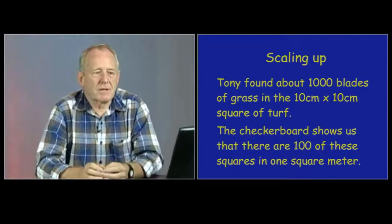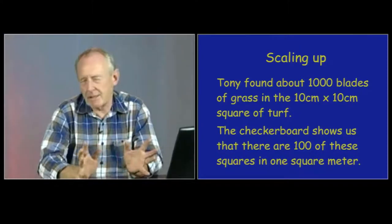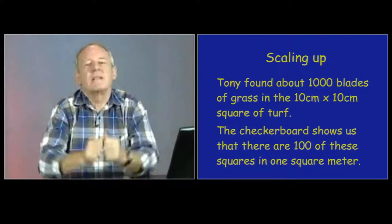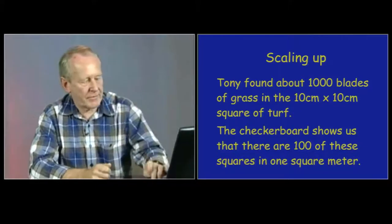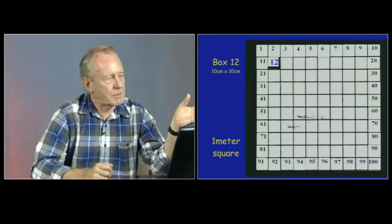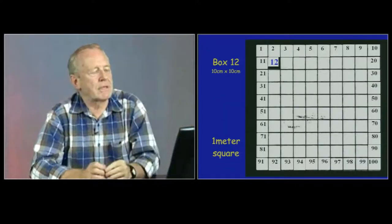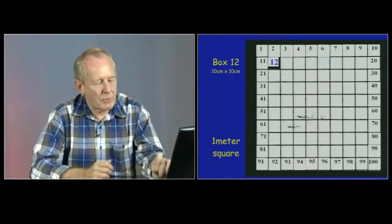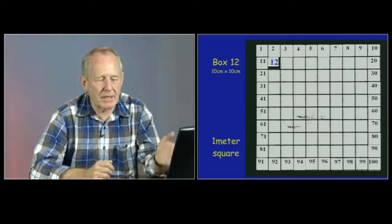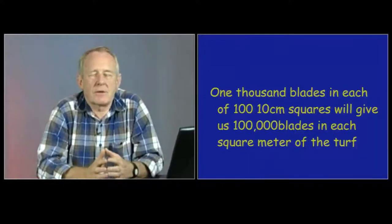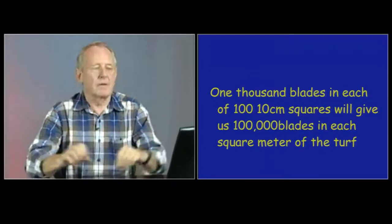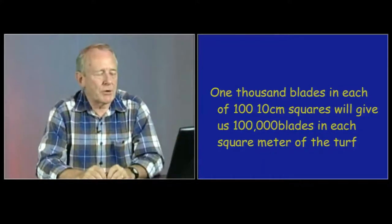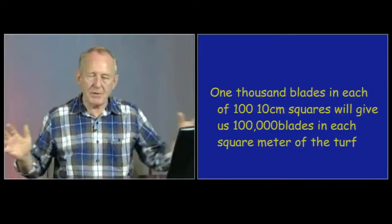We're going to scale up the results that Tony got. He found about 1,000 blades. His number was 980. That's near enough 1,000 for us, I think, at the moment. That was in a 10 by 10 centimeter square of turf. We have a checkerboard here, and the little square he was counting through is labeled with the number 12. That was the one where we found our 1,000 blades. There were 100 of those small squares within our square meter block, so there's our total number of blades just within the square meter. It's a big number already: 100 little squares, 1,000 blades in each one. So we have 100,000 in each square meter, roughly a square yard of turf.